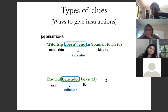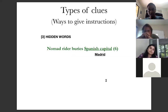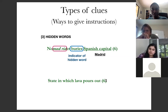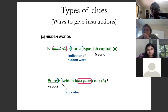Another type of clue is to hide the word within the clue itself. For example: 'Nomad rider, very Spanish capital.' The word 'berries' — or 'buried' — indicates that the answer is already buried in the clue. 'Madrid' is literally buried inside the phrase. In another example, 'State in which lava pours out' — the answer is 'vapor,' the definition is 'state,' and 'vapor' is sitting right inside the phrase. The word 'in' is the indicator showing that the answer is hidden within the words that follow.